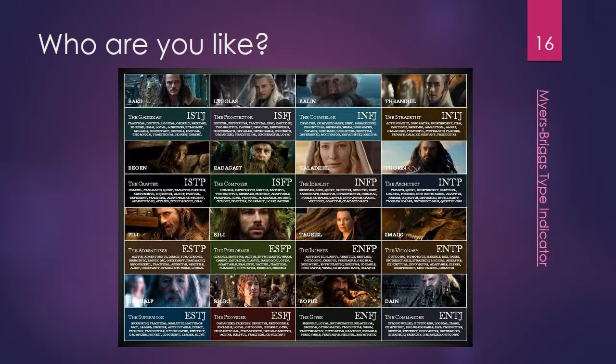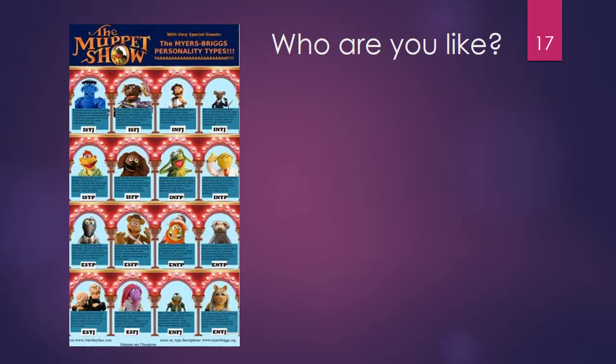The Myers-Briggs personality test is popular enough to illustrate psychological character types in well-developed literature and film. There are 16 types according to four criteria. Do you know your type? I test as INTJ. For more, simply search Myers-Briggs personality types or go to the Myers-Briggs Foundation. The Muppet Show offers a humorous and humbling illustration of the Myers-Briggs personality types applied to cartoon characters. I'm not surprised that Kermit the Frog is an introvert and that Miss Piggy is an extrovert. Who are you like?